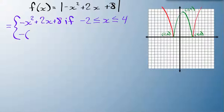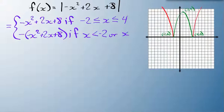The part we had to flip, so I'm going to write this in as negative, negative x squared plus 2x plus 8. And in that case, it was if x is less than negative 2, or x is greater than 4. So the outside wings, and that's where we get the piecewise function.